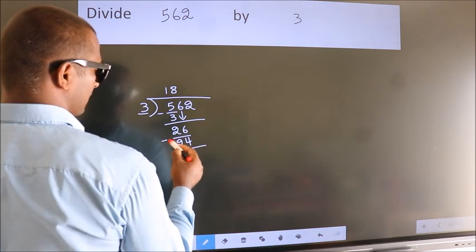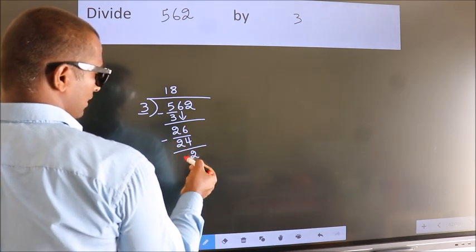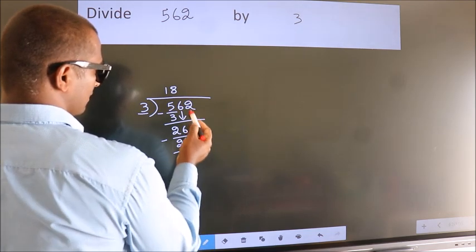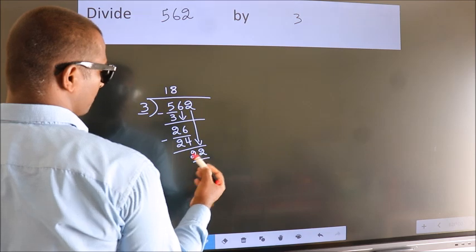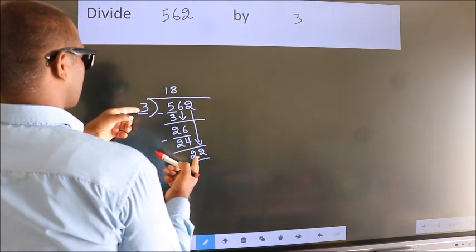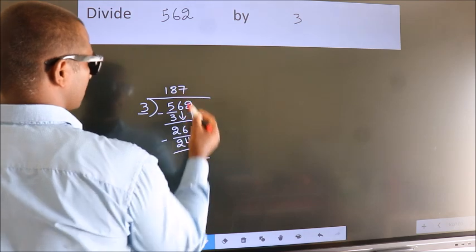Now, we subtract. We get 2. After this, bring down the beside number. So, 2 down. So, 22. A number close to 22 in 3 table is 3 7s 21.